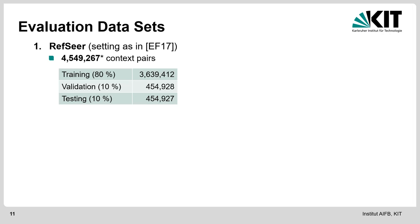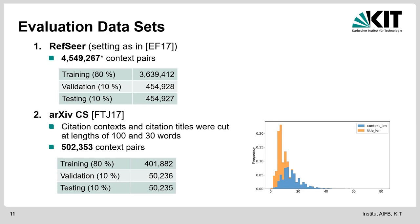We re-implemented this network from scratch and evaluated it. We used Refseer, a dataset which has already been used in citation recommendation various times, using the same setting as Ebisu and Fang from 2017. However, we were not able to get the cited author information for some unknown reason. We ended up with 4.5 million context pairs split 80% for training, 10% for validation, and 10% for testing. We also used ArXiv-CS — computer science publications from the arXiv platform. After cutting out citation contexts that were too long, we had about 500,000 context pairs with the same 80/10/10 split.